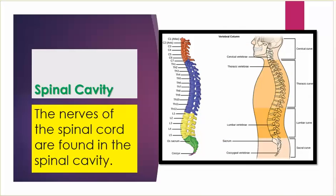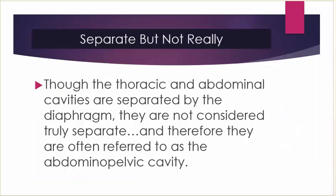Spinal cavity: the nerves of the spinal cord are found in the spinal cavity. Though the thoracic and abdominal cavities are separated by the diaphragm, they are not considered truly separate, and therefore they are often referred to together as the abdominopelvic cavity.